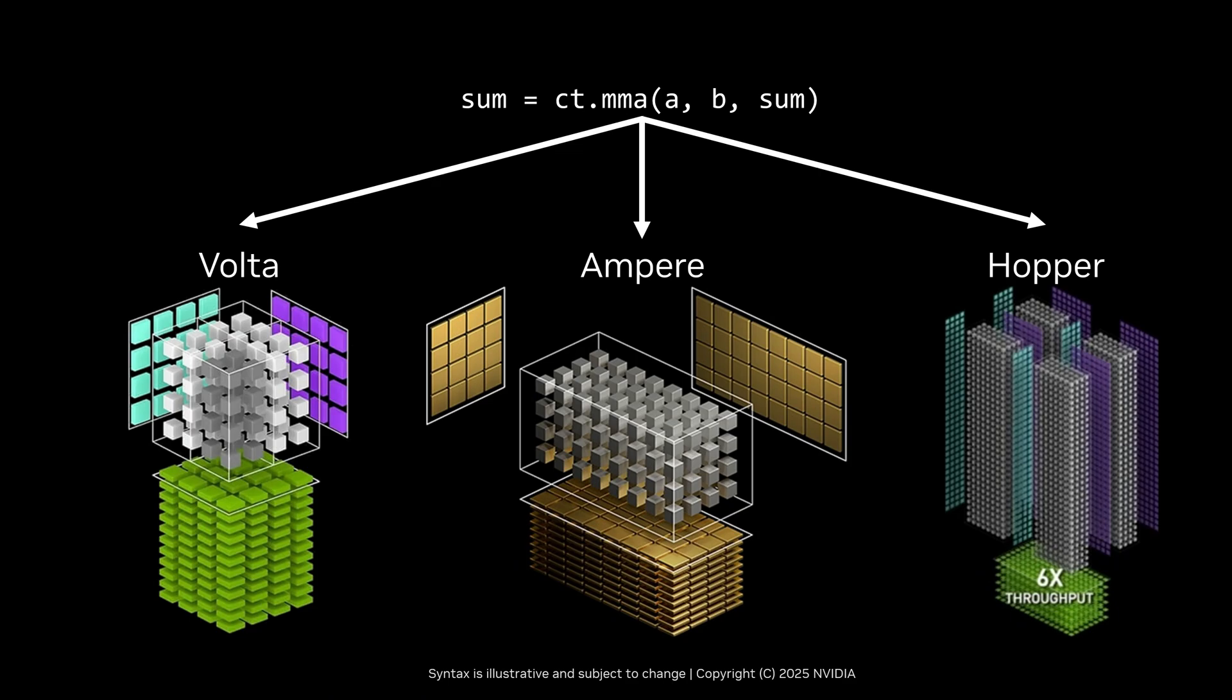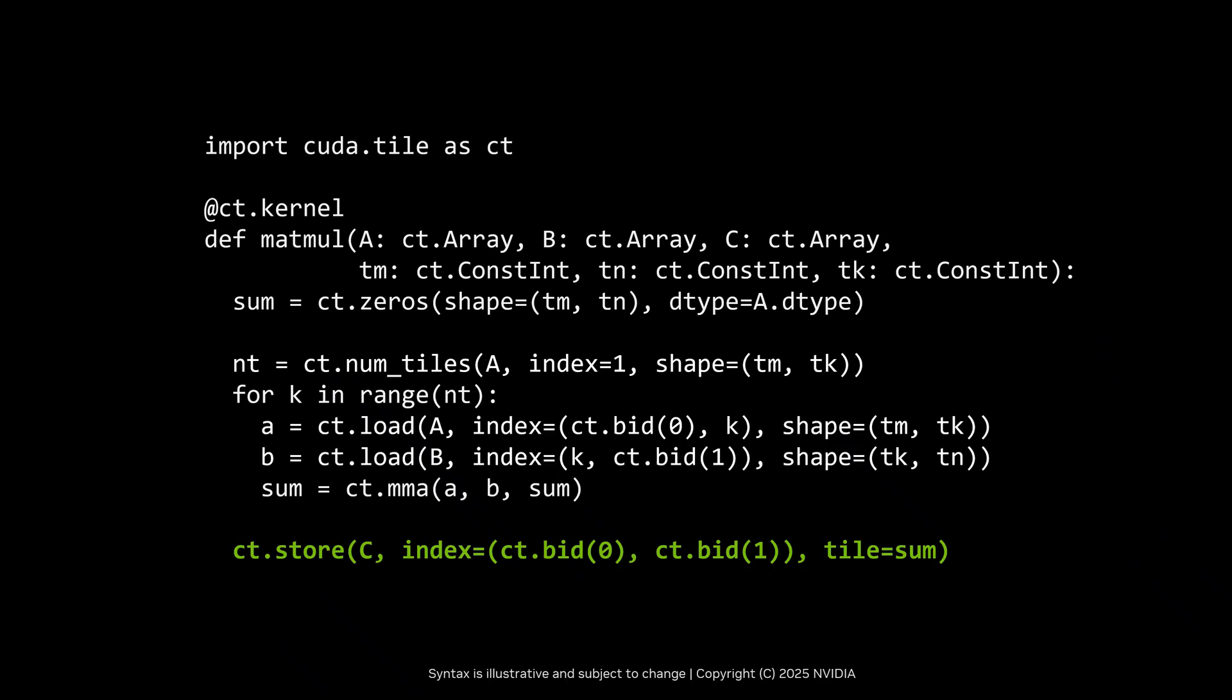This has forced users to rewrite tensor core code for every new GPU that we release. But with Qtile, you don't have to worry about all of these changes. You can write tile code once and the system will take care of mapping it to current and future tensor core hardware. Then finally, we have a store, which writes a tile into a subset of a global array.